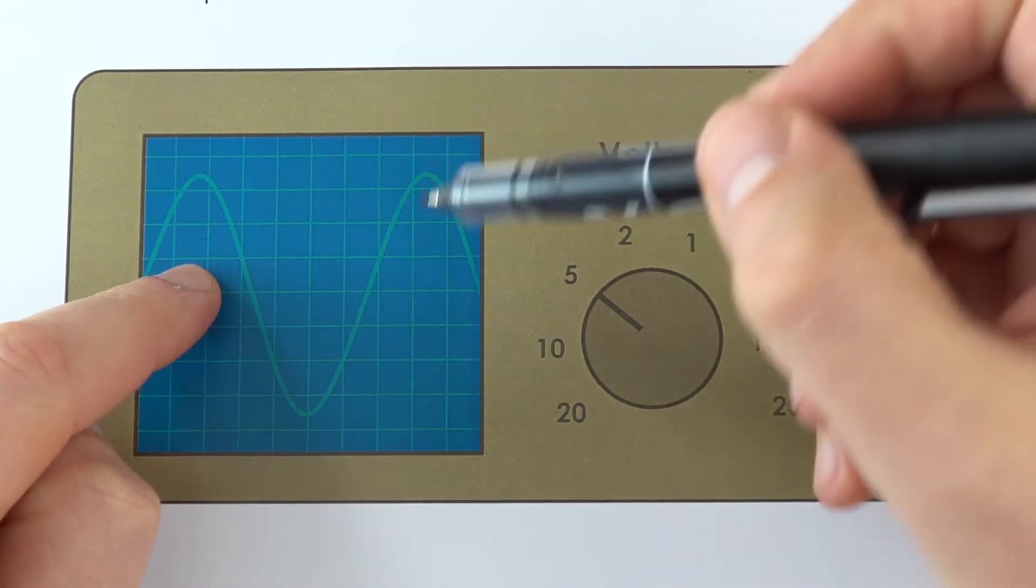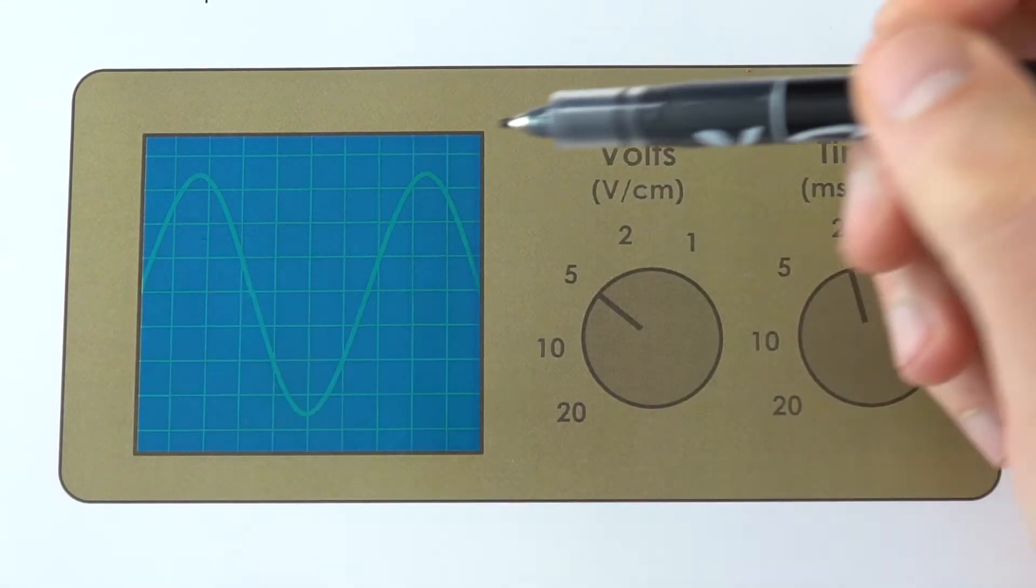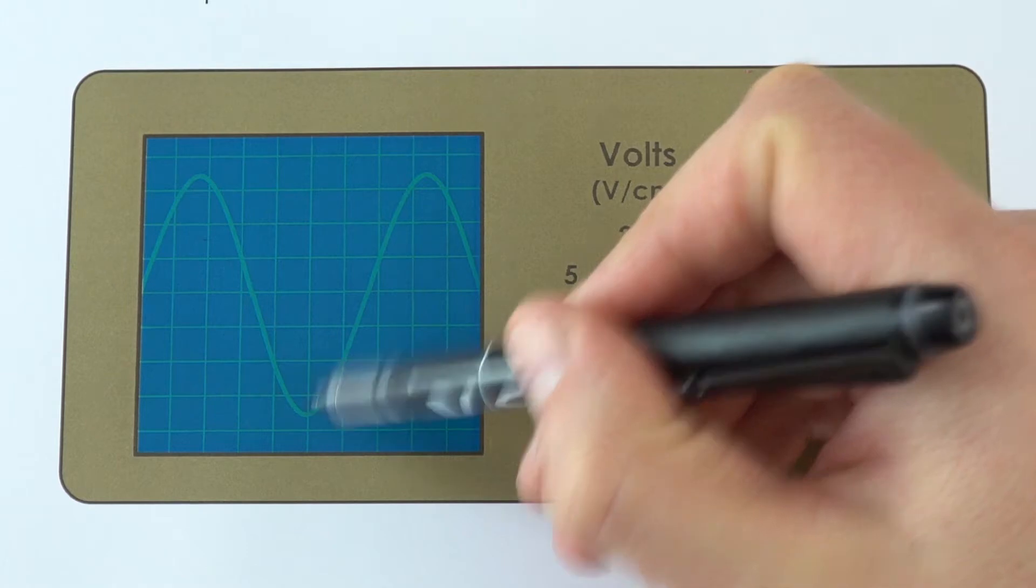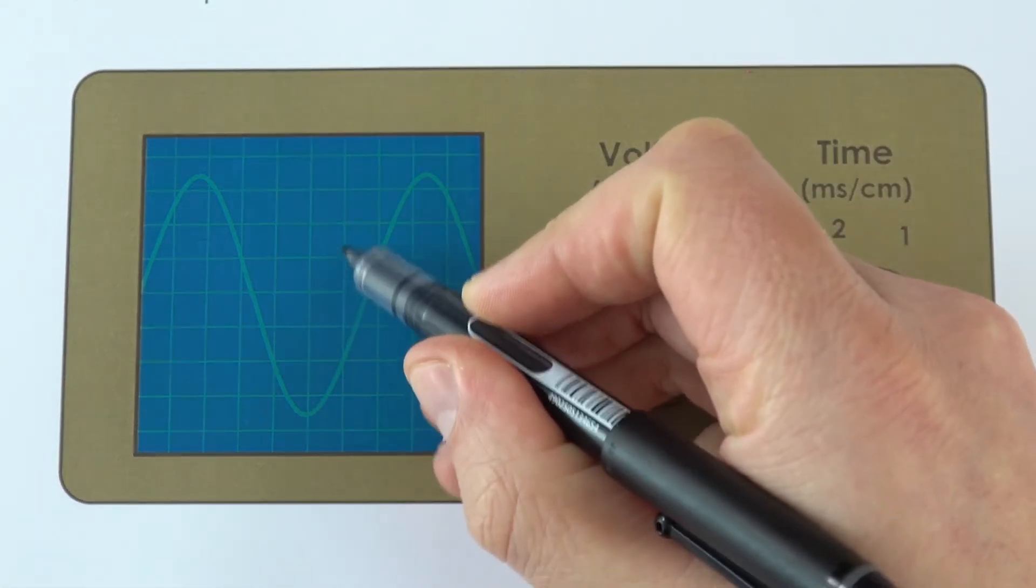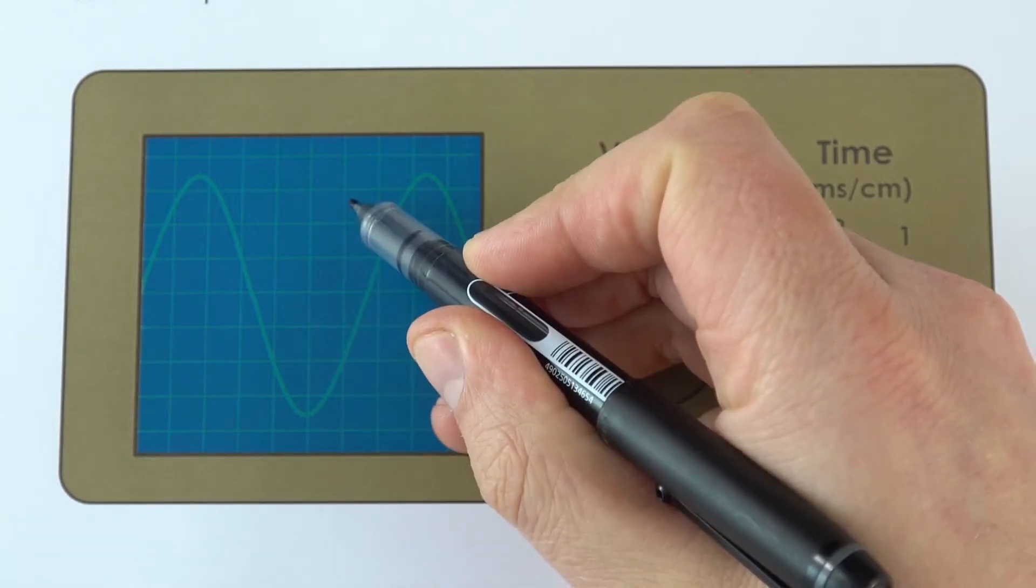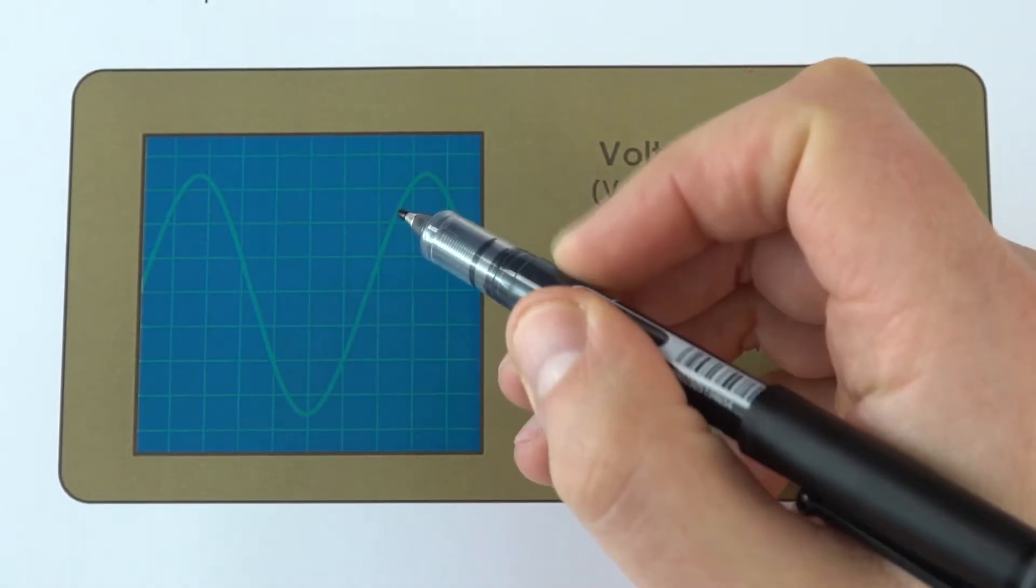We want to know the amplitude, so we're going to work out the total height of this wave. It's kind of halfway between, so basically what we have is one, two, three, four, five, six full squares, a half square here and a half square there.